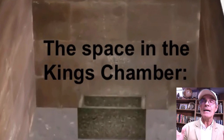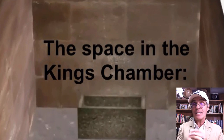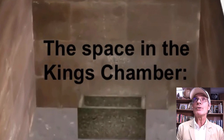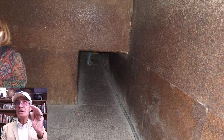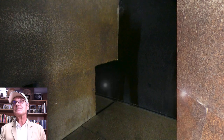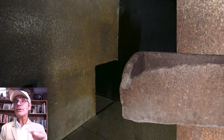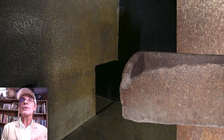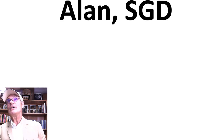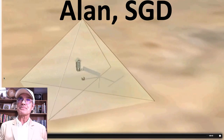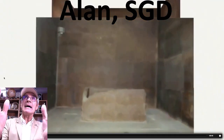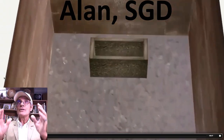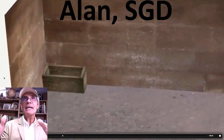Here's today's point about the fine structure constant: the space in the King's Chamber. Here's a picture I took of the entrance into the King's Chamber, and here's another picture I took. You can't fit the coffer that's in the King's Chamber out through that door — but you can if you turn it sideways. If you turned it sideways, it would fit out that door. My friend Alan from Sacred Geometry Coded put together these graphics, so we're going inside the King's Chamber now, and you can see that coffer.